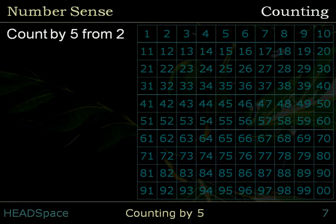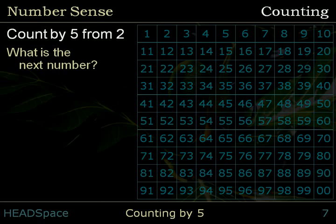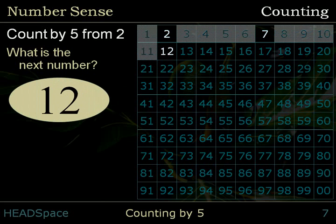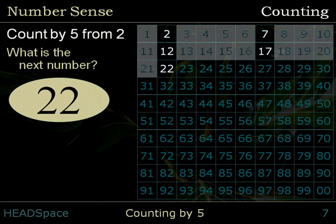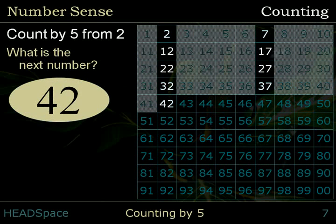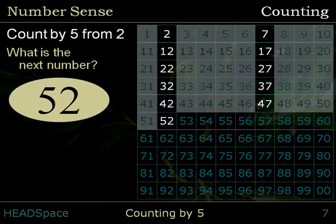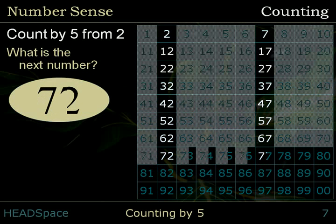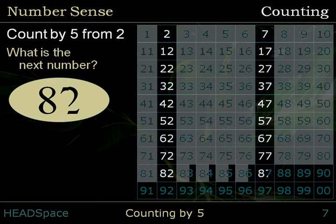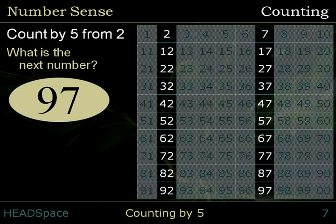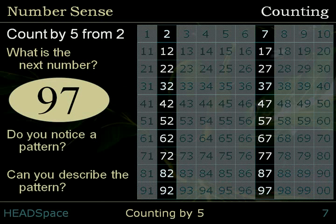Count by 5 from 2. What is the next number? 2, 7, 12, 17, 22, 27, 32, 37, 42, 47, 52, 57, 62, 67, 72, 77, 82, 87, 92, 97. Do you notice a pattern? Can you describe the pattern?